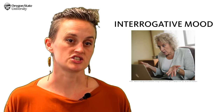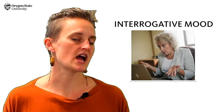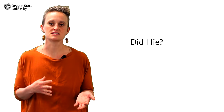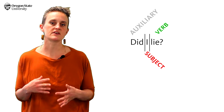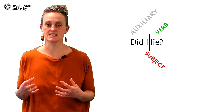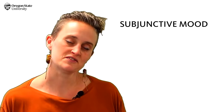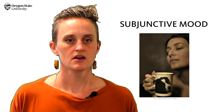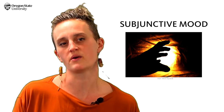Interrogative mood asks a question. It expresses uncertainty about what's happening or has happened, or is trying to get information. Did I lie? This question uses a dummy operator or an auxiliary — the word 'did' — as well as having a question mark. But some sentences in the interrogative mood can use question words like who, what, when, where, how, and why. The subjunctive mood expresses desire; it presents a contrary-to-fact situation. You might even think of the subjunctive mood as a tiny bit of fantasy that you can throw into your sentences.